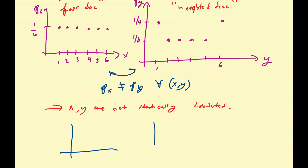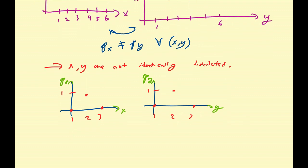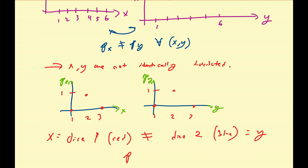An example of variables that could be identically distributed: suppose we have two distributions, each with values one, two, three, and each with the same probabilities. If this is X with P(X), and this is Y with P(Y), and those probability values are equal, then X and Y would be identically distributed. But of course it doesn't mean those variables are equal — this could be coin one and coin two, or dice one and dice two, like a red and a blue colored dice. The variables X and Y are not equal, but P_X and P_Y are equal — that's what we call identically distributed.